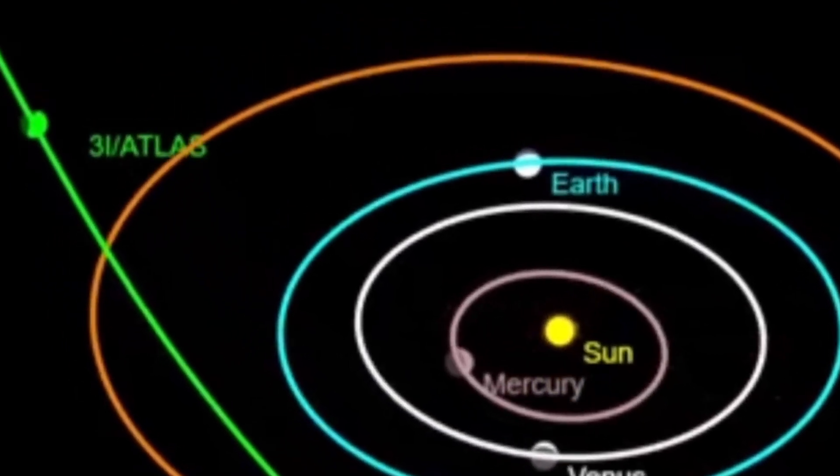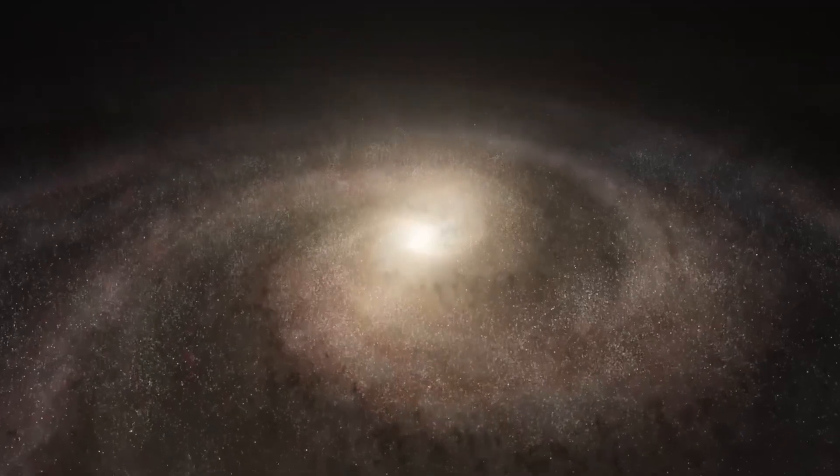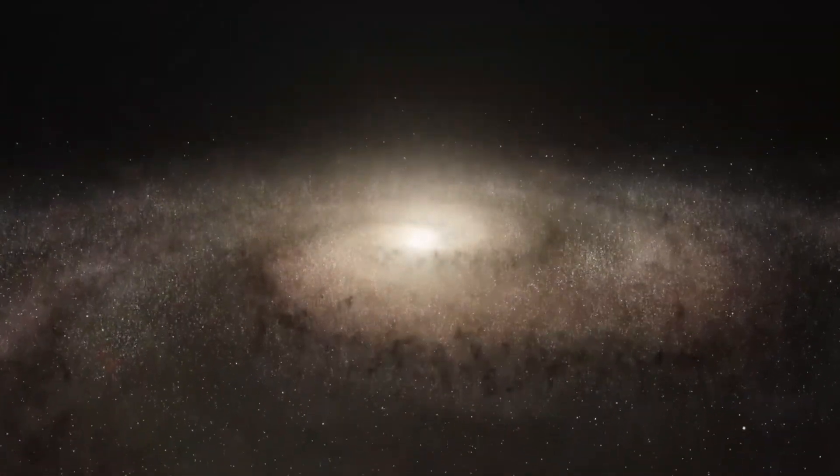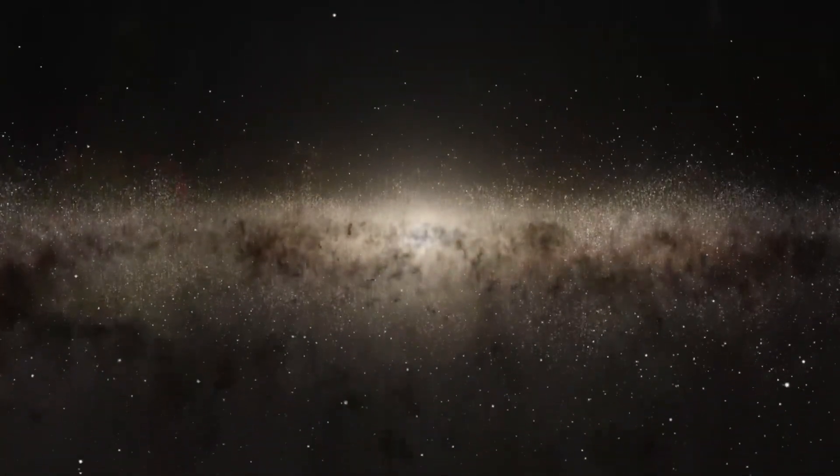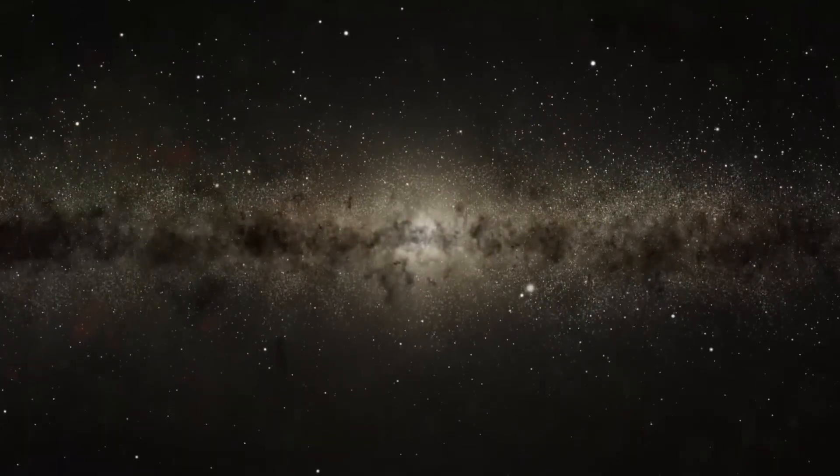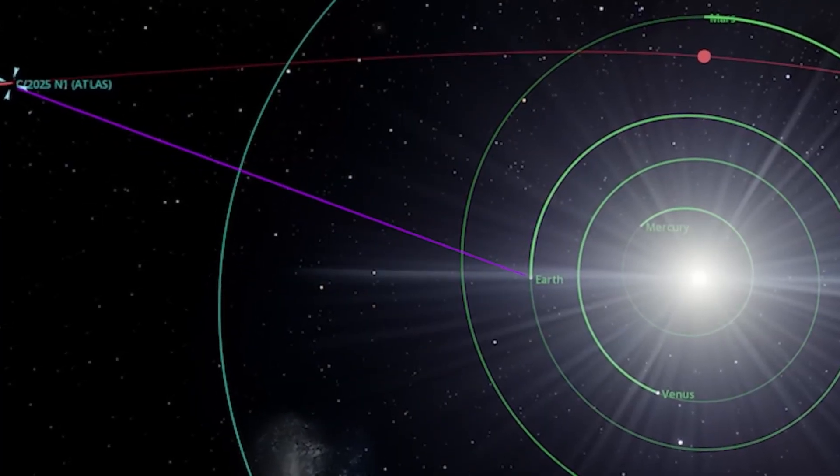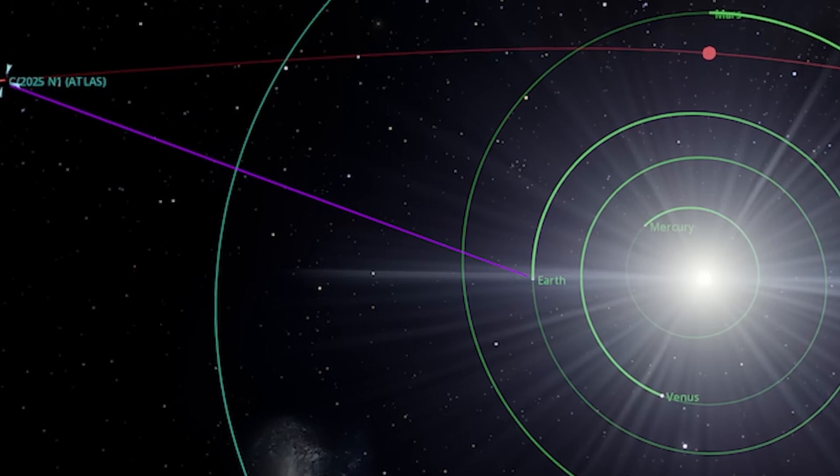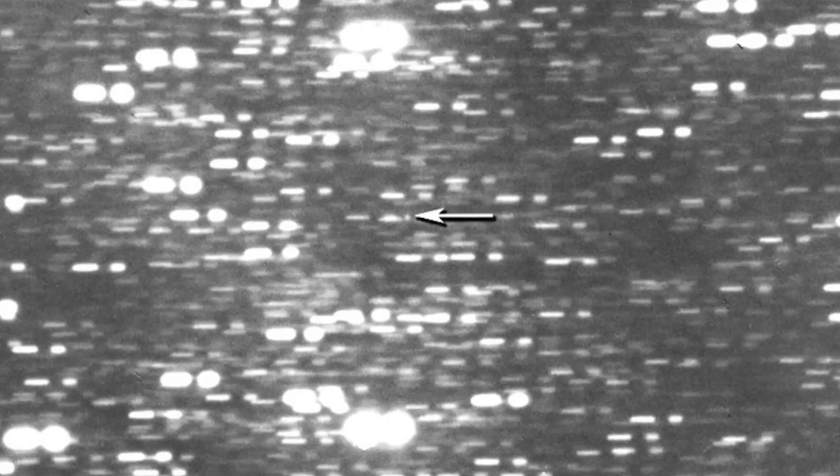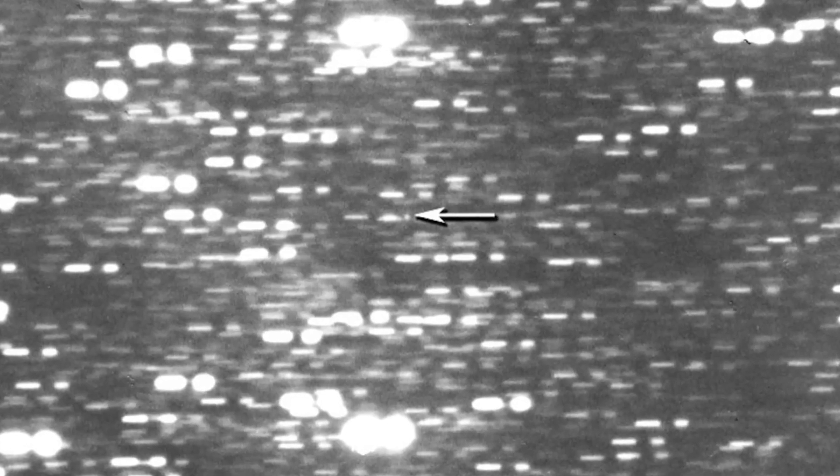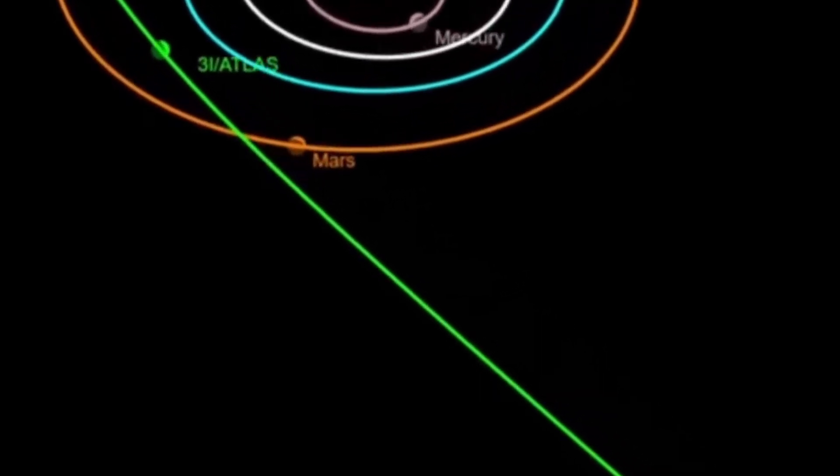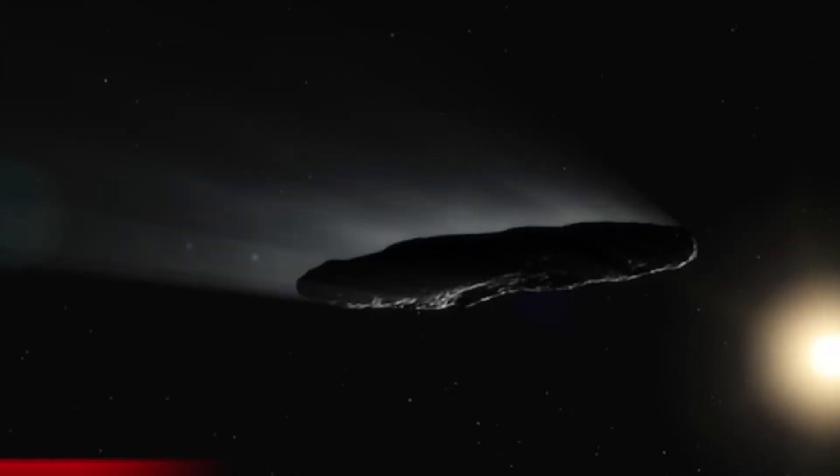3E Atlas combines the special features of its two predecessors in an interesting way. It moves at extreme speeds like Oumuamua, is unusually bright like Borisov, and follows a trajectory that clearly originates from outside the solar system. Particularly exciting, its brightness suggests a comparatively large size. 3E Atlas may even be significantly larger than Oumuamua and Borisov. If this new visitor from the depths of space really is a comet, it will be a truly colossal specimen.